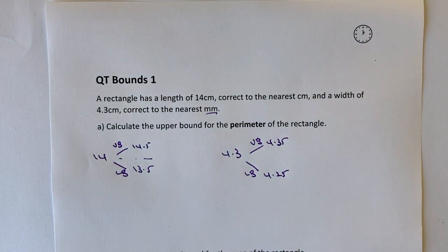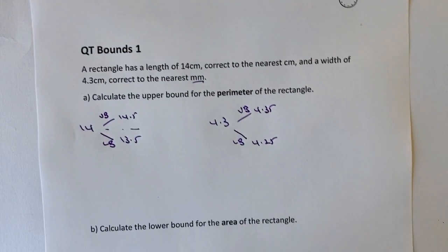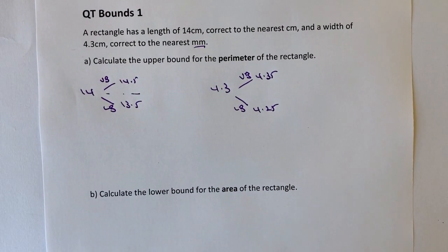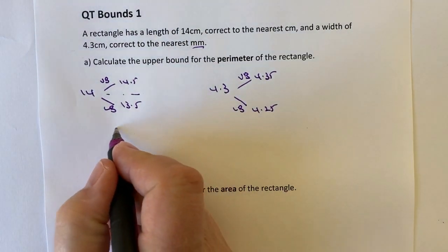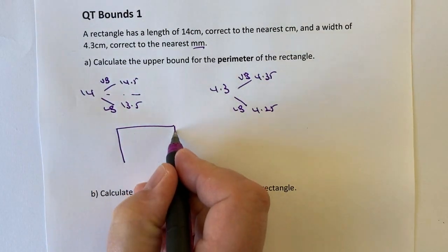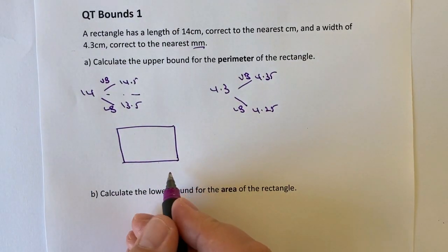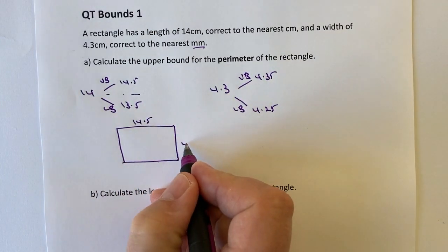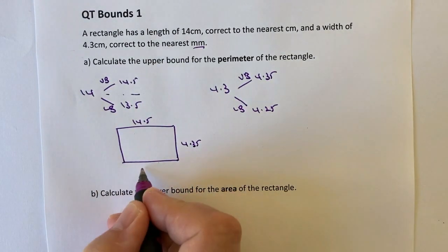So let's have a look at that. We're being asked in this particular part A to work out the perimeter. In part B, we're going to be working out the area. But if we look at the perimeter first, what we've got is basically a rectangle, and the upper bound is going to be the longest this can be is 14.5. The longest this can be is 4.35.